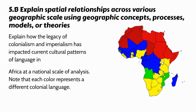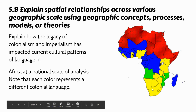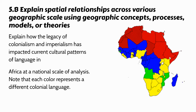Another example for this learning target: explain how the legacy of colonialism and imperialism impacted current cultural patterns of language in Africa at the national scale of analysis. Each color on the map represents a different colonial language. You would need to discuss how Africa was carved up — perhaps bringing in knowledge of the Berlin Conference — and explain why certain regions speak French and others speak English because of which imperial powers took them over.